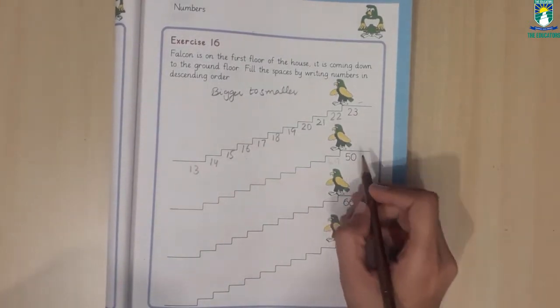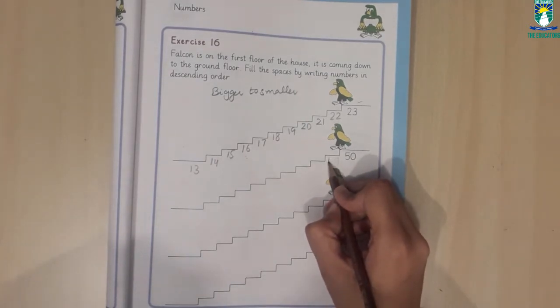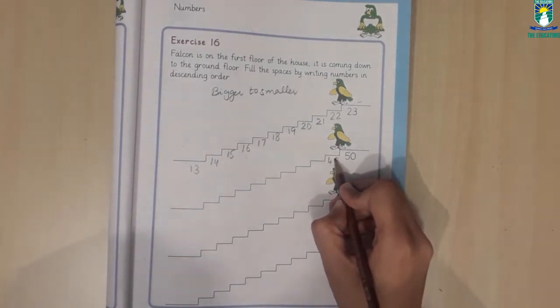Next number is 50. We will start with downward. Backward counting.